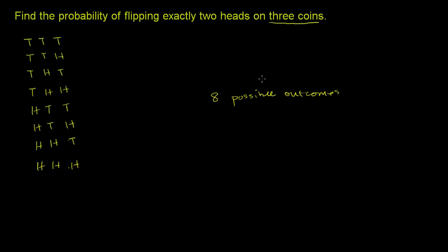Now, how many of the outcomes involve flipping exactly two heads? Let's see. That's all tails. That's one head, one head. This has two heads right there.